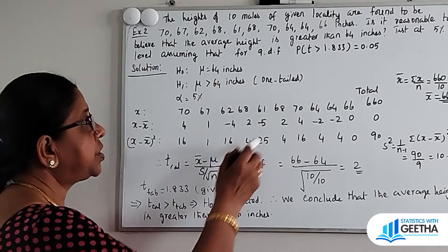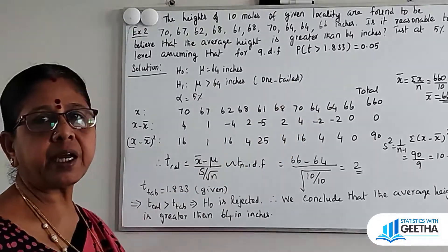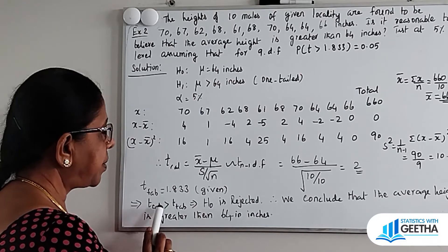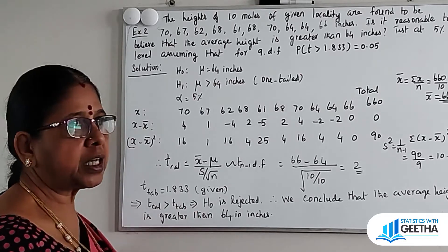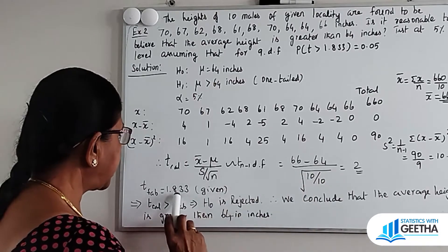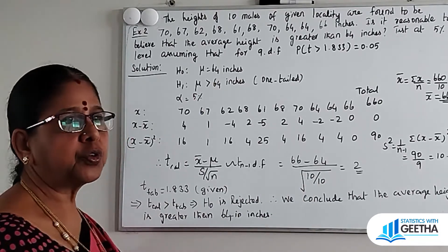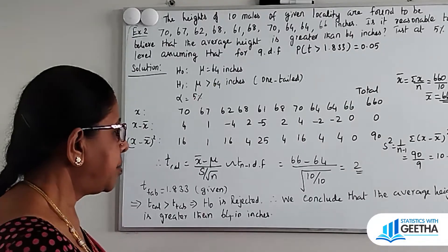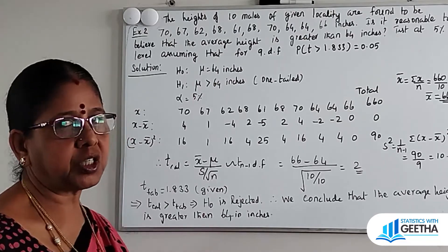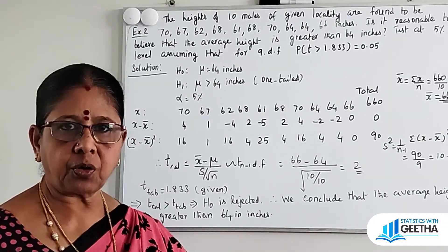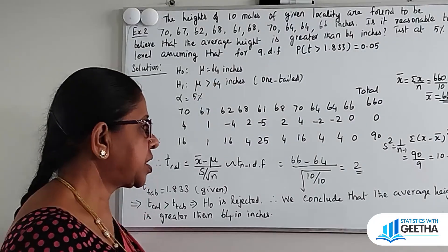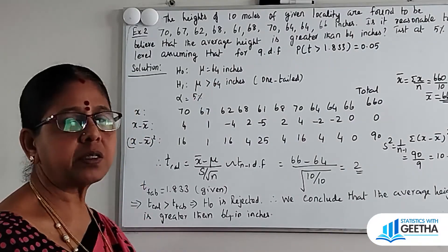T table value given is 1.833. Comparing T calculated and T table value: T calculated value 2 is greater than T table value 1.833. Therefore H0 is rejected. We conclude that the average height is greater than 64 inches.